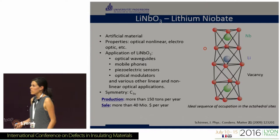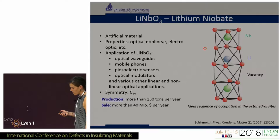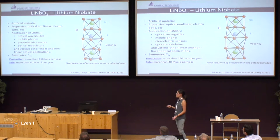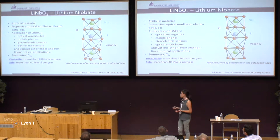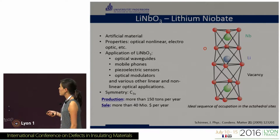Lithium niobate is a human-made material with many properties. For example, it is an optical non-linear, electro-optic, and photo-refractive material. It has applications in optical waveguides, mobile phones, sensors, and modulators. More than 150 tons of lithium niobate are produced per year, and it generates more than 40 million dollars per year.